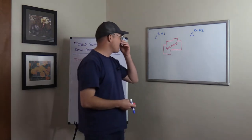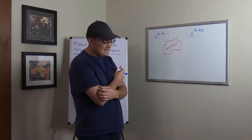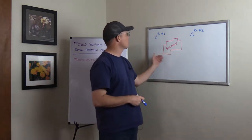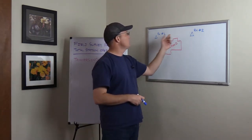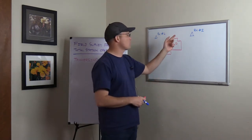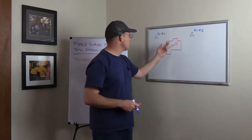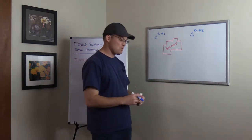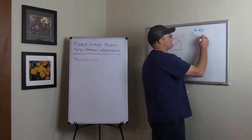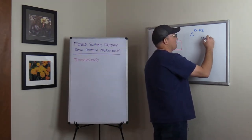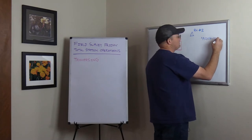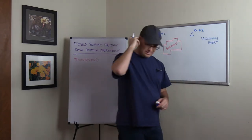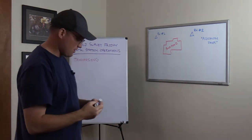We have this problem as surveyors: whenever we're on a site, if we can't see everything we need from two points, then we've got to figure out how to set additional control points and relate them to the first pair of control points that we put down. This first two points you put on a site is usually your azimuth pair if you're doing total station work — they're kind of special points. Once you need to set up on a third point that's outside of your azimuth pair, you need to do what's called a traverse.